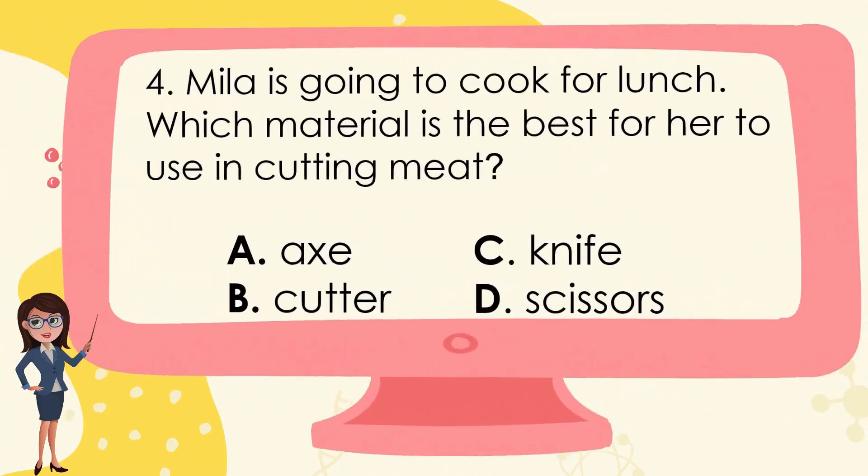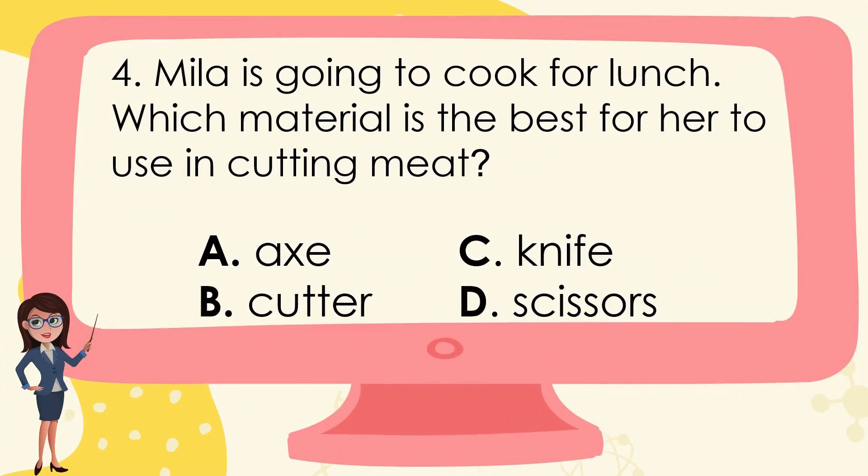Mila is going to cook for lunch. Which material is the best for her to use in cutting meat? A. Axe, B. Cutter, C. Knife, D. Scissors. The correct answer is C. Knife.